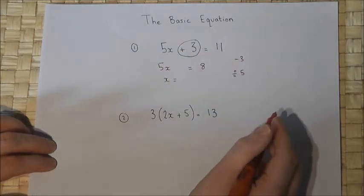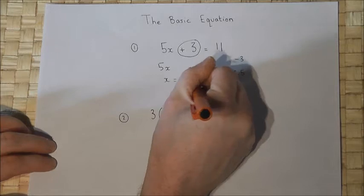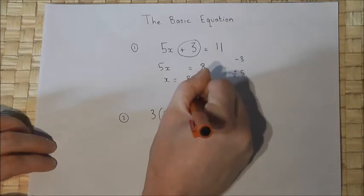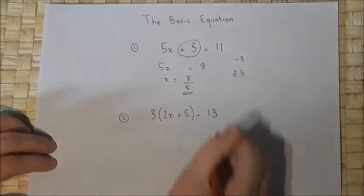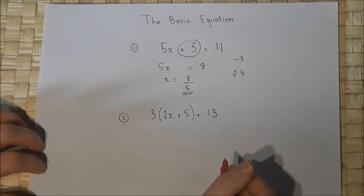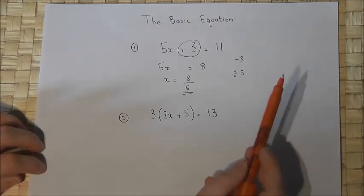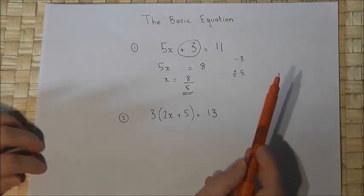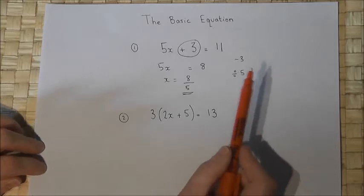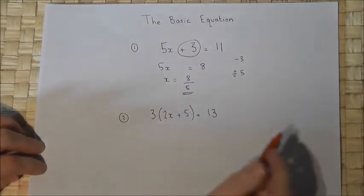Dividing by 5 gives x equals 8 over 5. In this video I will leave my answers as fractions. So any equation, however complex, can in the end become one of these simple equations.